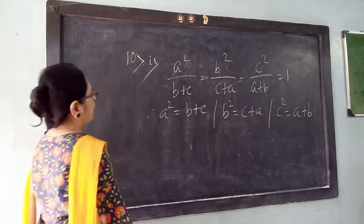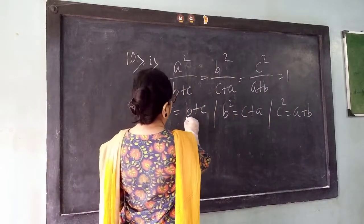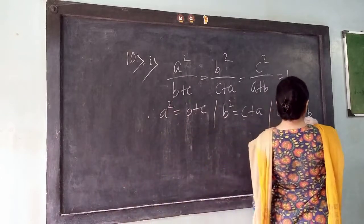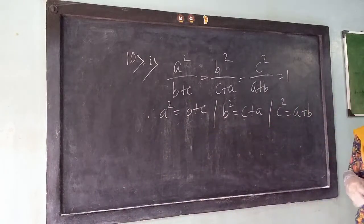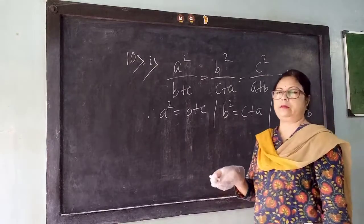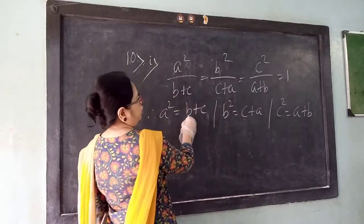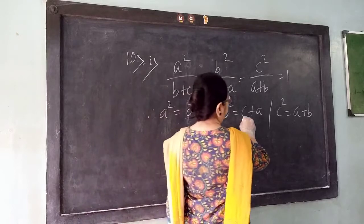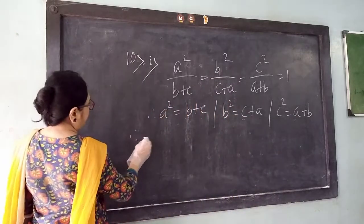Now see, there is right hand side B plus C, there is C plus A, there is A plus B. So we make all the right hand sides the same. Here I have to add A with both sides, B with both sides, and C with both sides.